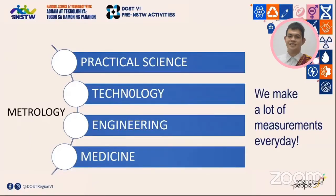Incorrect measurements lead to wrong decisions, which can have serious consequences. Moreover, metrology is a structure that ensures these measurements are stable, comparable, and accurate, providing confidence in measurement at a stated level, usually by quoting a measurement uncertainty. Metrology is applied in practically all fields including agriculture, commerce, and manufacturing, to name a few.